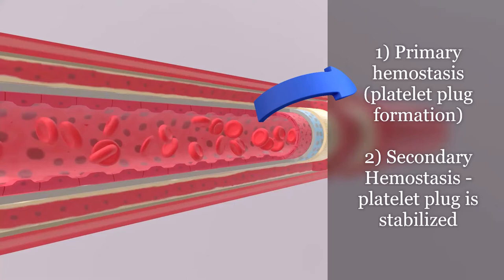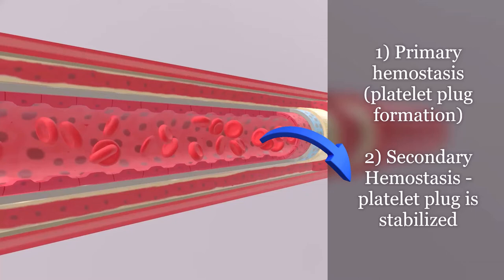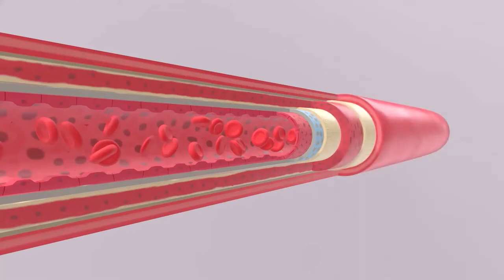What happens is a very weak platelet plug is formed. In secondary hemostasis, this platelet plug is stabilized. But in this video, we're going to focus on primary hemostasis.